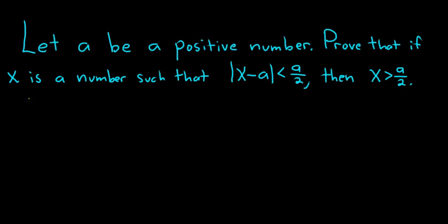Let's go ahead and work through this. Proof. We'll start by assuming that x is a number such that this condition is true. So suppose that we have the absolute value of x minus a less than a over 2, where x is a number.